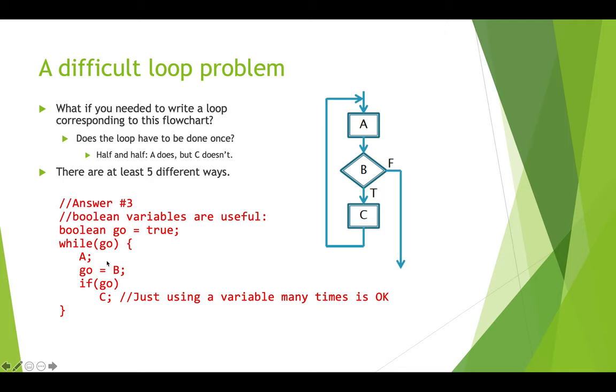We're going to definitely do A, and then we assign go to the result of evaluating the expression B. So if B is true, go will be true. And then we have this same type of thing. If go, then we do C. And if B is not true, then C will not be executed. And then we're going to come back up to the top of the while loop and we're going to test go again. And so this is pretty good because we're not actually doing the B expression evaluation. All we're doing is looking at the Boolean variable to see whether or not it's true. So this is a reasonably efficient way to go about doing this.